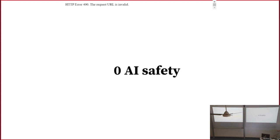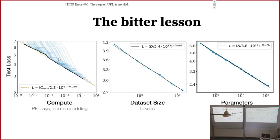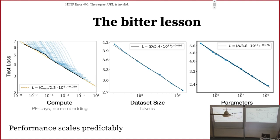AI safety is a huge topic. We'll start with a simple observation: the scaling laws. Kaplan et al., and already before then, it was observed that if you make models bigger, train them for longer, train them on more data, they just keep getting better. There are two salient features: performance scales reliably with these quantities, and at the same time, specific capabilities emerge suddenly and unpredictably. This is somewhat contested — there's a recent paper about the mirage of metrics, and some emergent abilities are an artifact of specific metrics. But GPT-3 does things GPT-2 couldn't, GPT-4 does things GPT-3 couldn't — things they were not explicitly trained for, like how to play chess, how to model humans and human personality flaws.